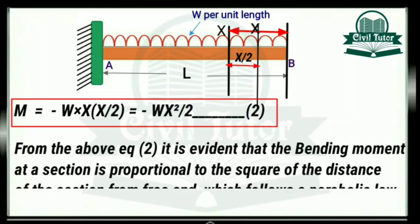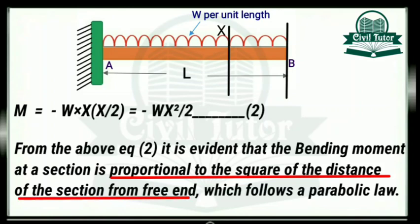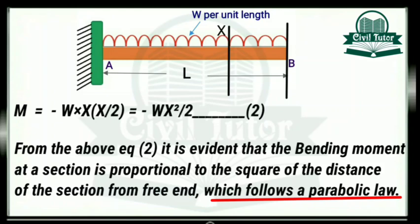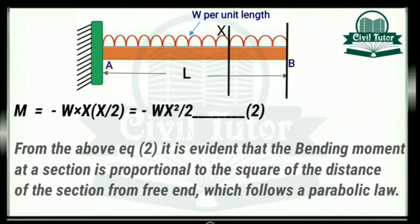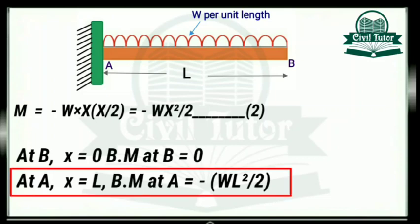From equation 2 it is clearly evident that the bending moment at a section is proportional to the square of the distance of the section from the free end, which follows a parabolic law. This indicates that the bending moment diagram for this beam carrying UDL will be a parabolic curve. At point B the value of X is 0, so bending moment at B will be 0. At point A, X equals L, so substituting L in equation 2 we get bending moment at A equal to minus WL squared divided by 2.